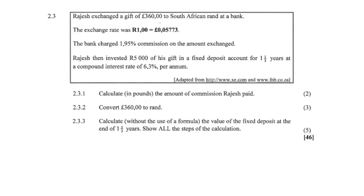Rajesh exchanged a gift of 360 pounds GBP to South African Rand at a bank. The exchange rate was one Rand equals 0.05 GBP. The bank charged a 1.95% commission on the amount exchanged.